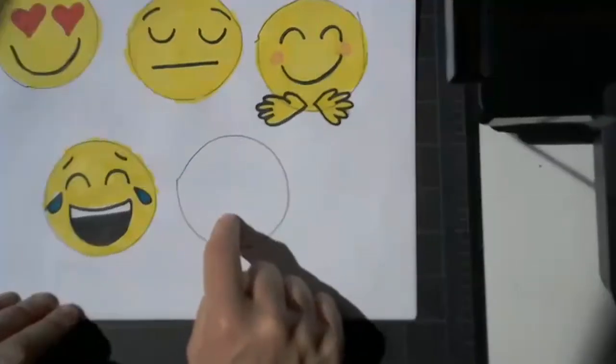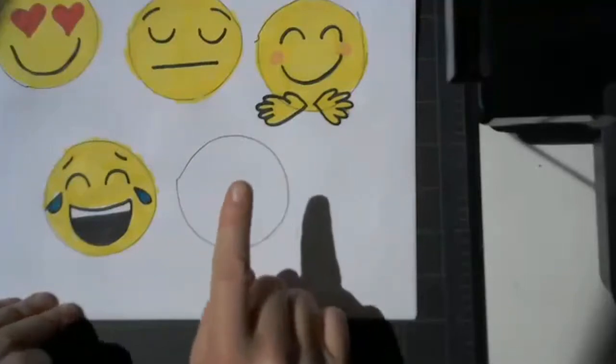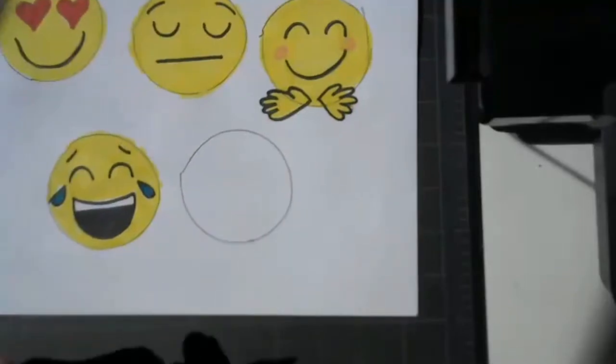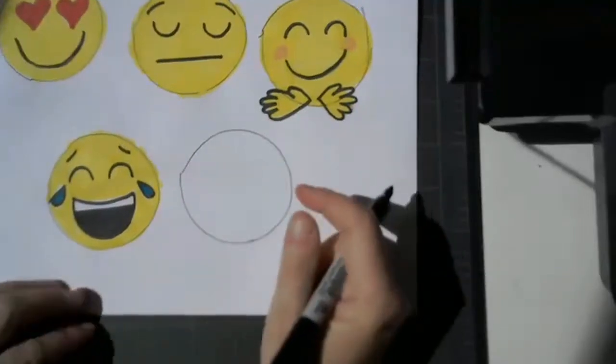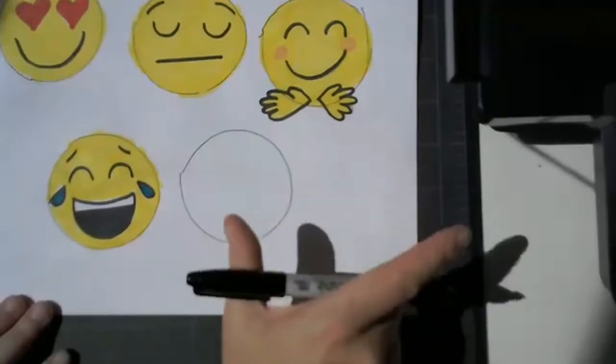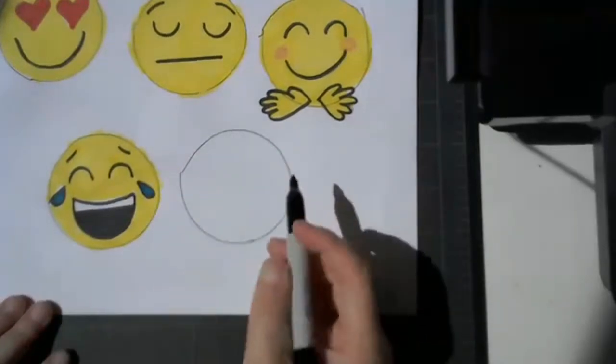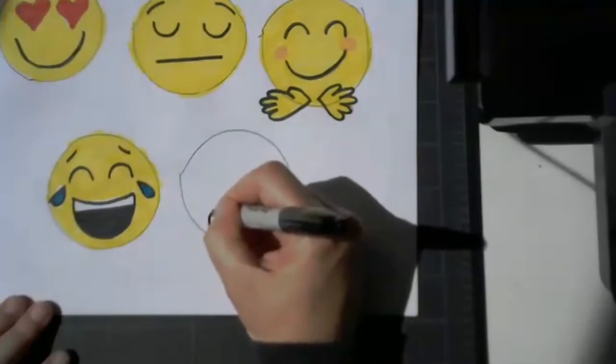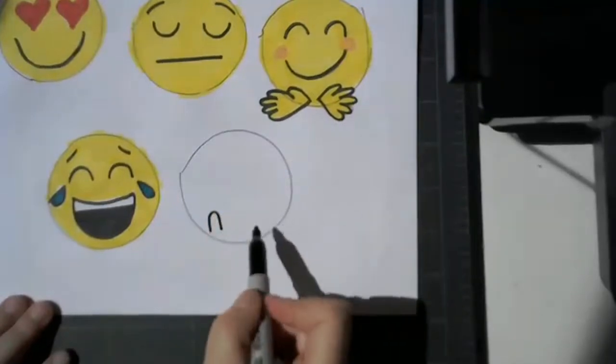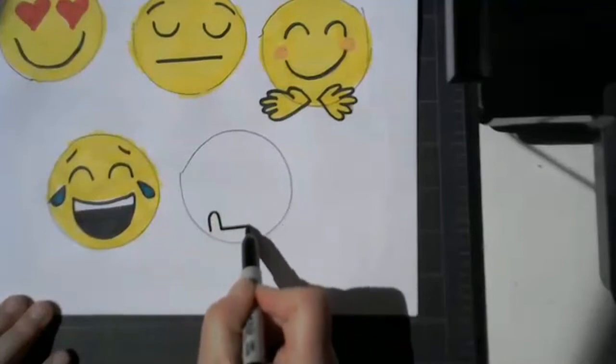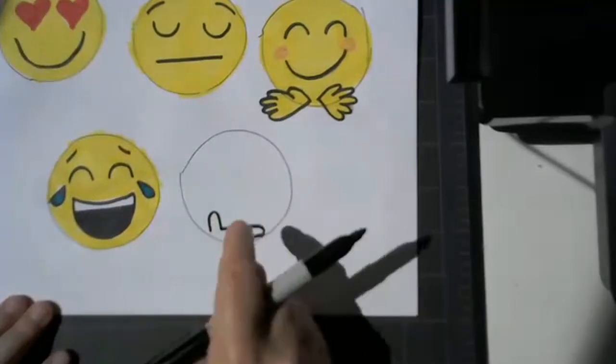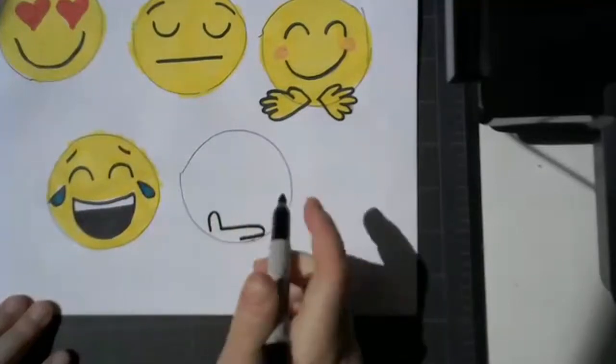So my last one, the thinking about it emoji, is a little bit more complicated. That's why I saved it for last, the best for last. We're going to do that hand on the chin. So it looks like you're like hmm with your hand on your chin. We're going to start with the thumb, which is up. And then we're going to do that pointer finger like that.